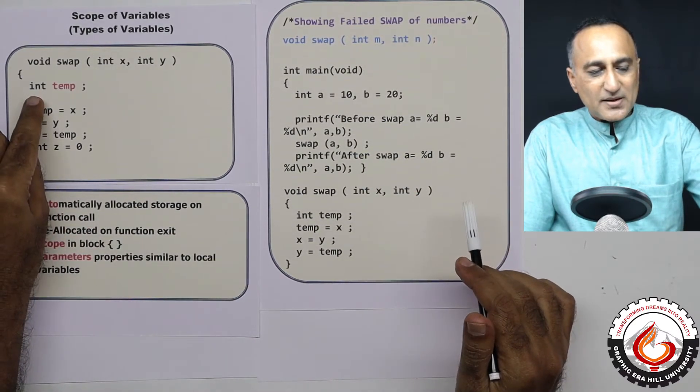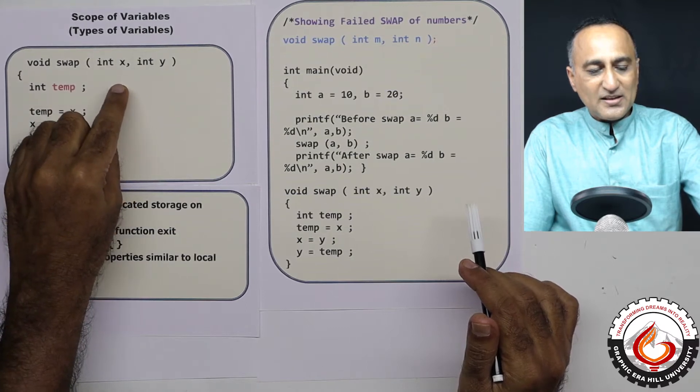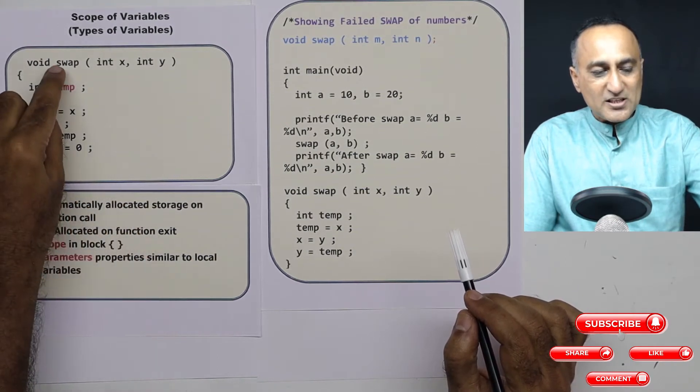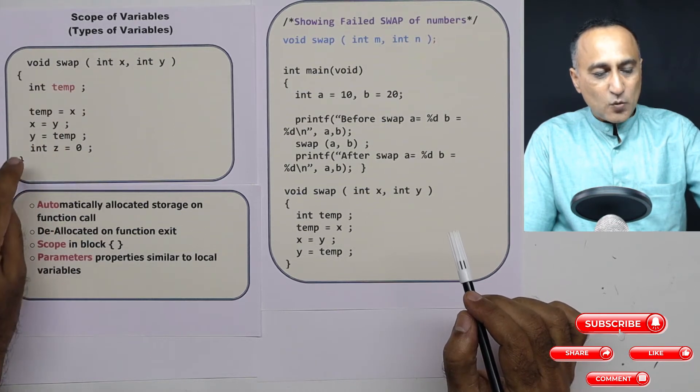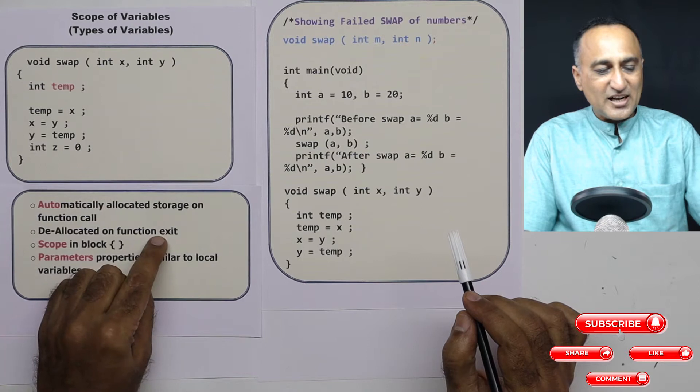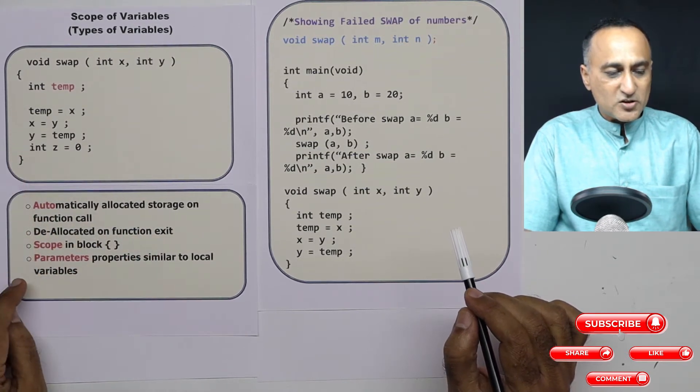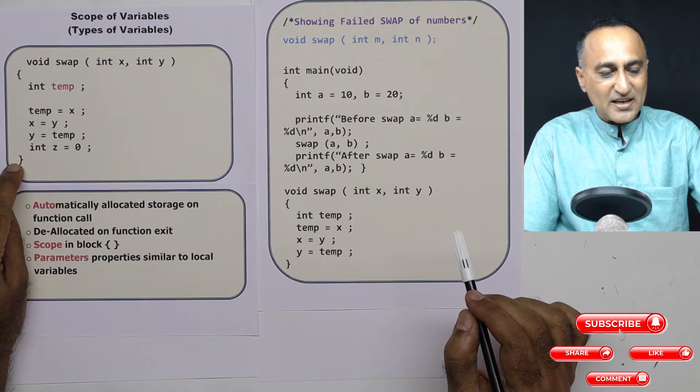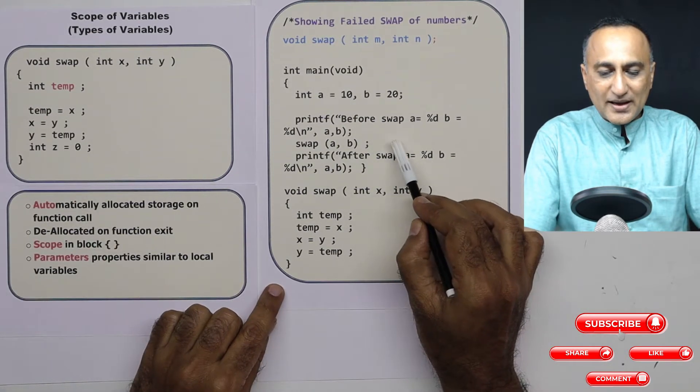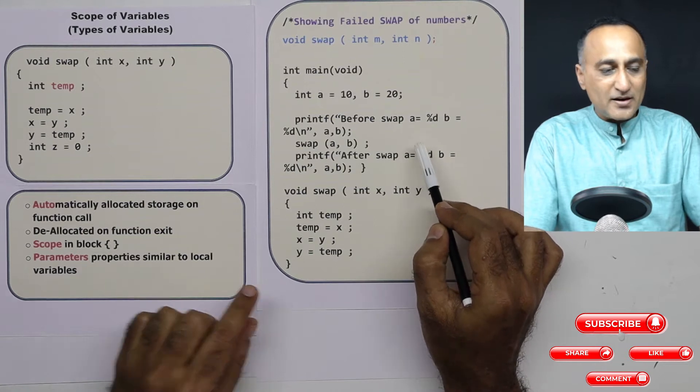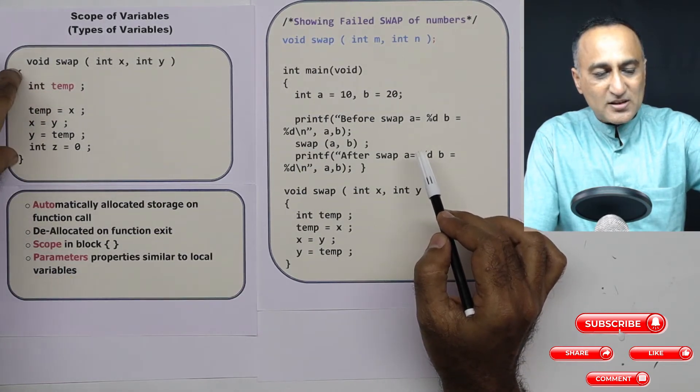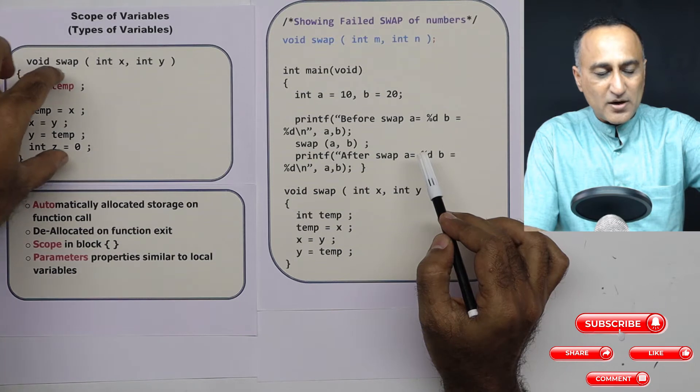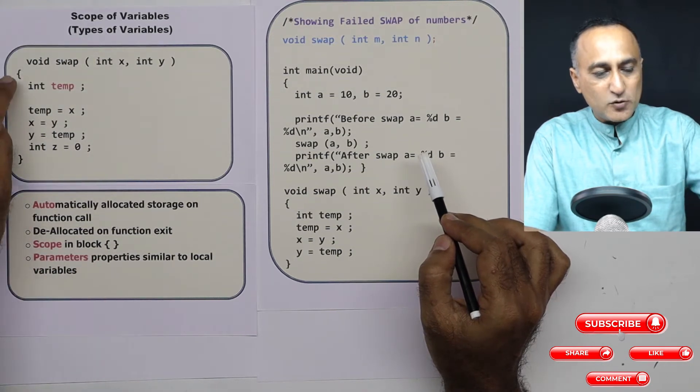So variables which are declared here, like int temp, I could have had int i j. These are all known as local variables, and they are automatically allocated when this function code begins to execute. Once this flower brace is reached, it is deallocated. Then the important word called scope - I can print the value of temp starting from its declaration all the way till this brace. If I try to print the value of temp or x y here, I'm going to get a compiler error because temp x and y have life only within this flower bracket. They have no existence or no access outside this flower brace. That's why the scope is limited to this flower bracket.